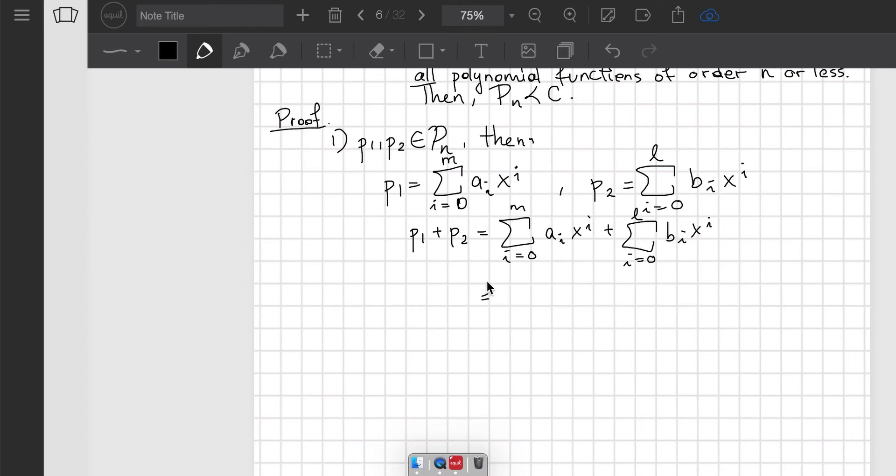Without loss of generality, assume that m is greater than or equal to l. It could be the other way; it doesn't really matter. Then we can write this as one entire sum from 0 to m of a_i x^i plus b_i*, where I put an asterisk because these coefficients are going to be different.